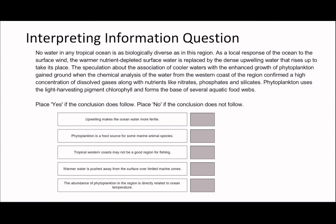Third and last question — once again feel free to pause and have a go. So: 'No water in any tropical ocean is as biologically diverse as in this region.' First statement: 'Upwelling makes the ocean water more fertile.' I don't really know what 'upwelling' was the first time I read this — but you can probably guess roughly what it means from context. The key point is: upwelling is hard to find a synonym for, so it's a good keyword. Looking at the relevant line: 'As a local response of the ocean to surface wind, the warmer nutrient-depleted surface water is replaced by the dense upwelling water that rises to take its place.' The upwelling water replaces the nutrient-depleted water, so it must make it more fertile — I'm going to agree with this.